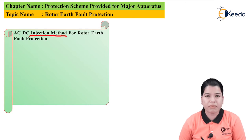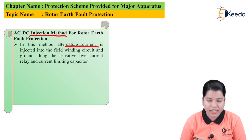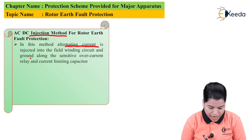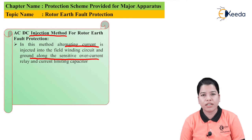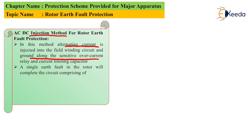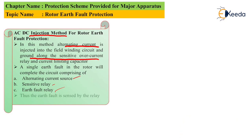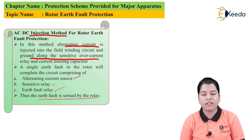The second method is the AC injection method for rotor earth fault protection. As the name suggests, in this method, alternating current is injected into the field winding and the ground circuit along with a sensitive earth fault relay. A current limiting capacitor is also connected. A single earth fault occurring in the rotor will complete its path through a circuit comprising the alternating current source, sensitive relay, and earth fault relay. Whenever the fault occurs, it will be sensed by the relay, which will signal the circuit breaker to isolate the faulty part from the healthy part.